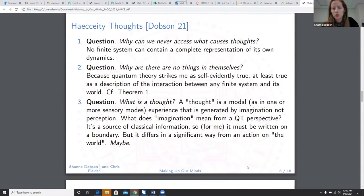So a few more questions. Why can we never access what actually causes thoughts? No finite system can contain a complete representation of its own dynamics. Why are there no things in themselves? Because quantum theory strikes me as self-evidently true. It's true as a description of the interaction between any finite system and its world. What is a thought? You have them, but what is it? So a thought is a modal, perhaps, as in one of our sensory modes, experience that isn't generated by imagination, not perception. But what does imagination mean from a quantum theory perspective? It's a source of classical information, but it must be written on a boundary. But it differs in a significant way from an action on the world, maybe.